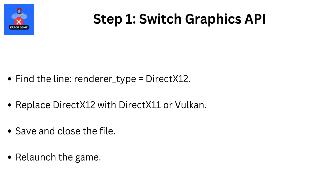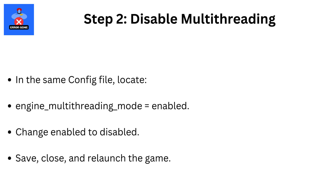Relaunch the game. Step 2: Disable Multi-Threading. In the same config file, locate Engine Multi-Threading Mode equals Enabled. Change Enabled to Disabled. Save, close, and relaunch the game.